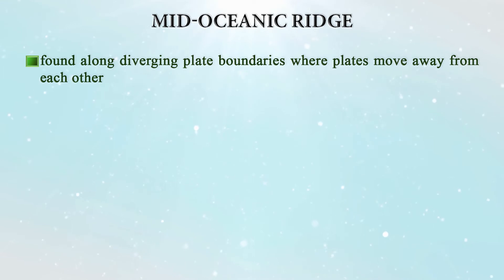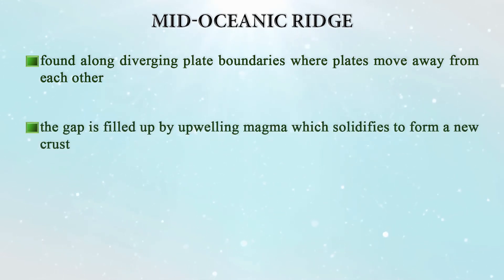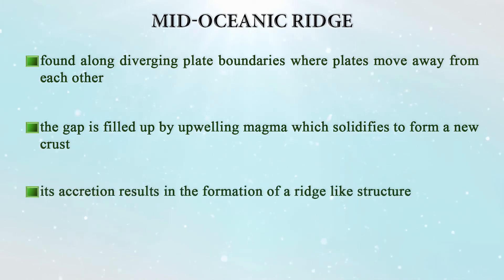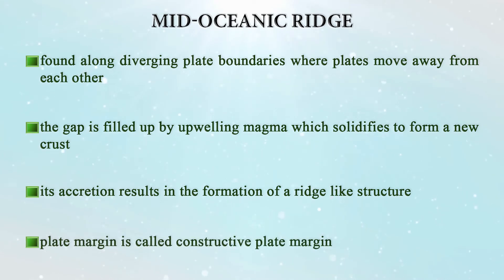Mid-oceanic ridges are a very interesting formation on the ocean floor. As you may have studied in plate tectonics, diverging plate boundaries are those where plates move away from each other. The gap is filled by upwelling magma which solidifies and forms new crust — hence these are also called constructive plate boundaries, as there is accretion or addition of crust. Mid-oceanic ridges are found along these diverging plate margins.